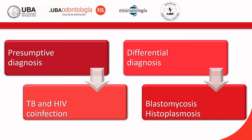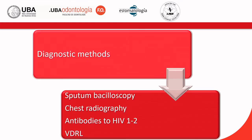Based on the oral lesion of the tongue and associated lymphadenopathy, a presumptive diagnosis of TB and HIV co-infection was established, with blastomycosis or histoplasmosis as differential diagnoses. In order to obtain a diagnosis of certainty, the following diagnostic tests were indicated: sputum baciloscopy, chest radiography, antibodies to HAV 1 and 2, and VDRL.